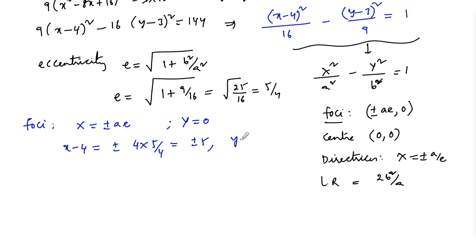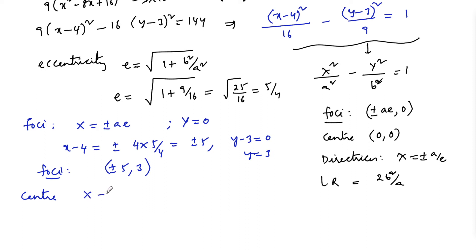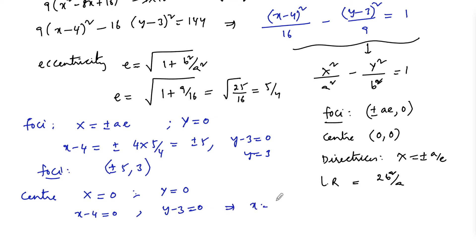For Y: y - 3 = 0, so y = 3. Therefore the foci are (4 ± 5, 3), which gives (9, 3) and (-1, 3), written as ±5 shifted: foci = (4+5, 3) and (4-5, 3). Center: X = 0 and Y = 0 means x - 4 = 0 and y - 3 = 0, so x = 4 and y = 3. Therefore center of hyperbola is (4, 3).